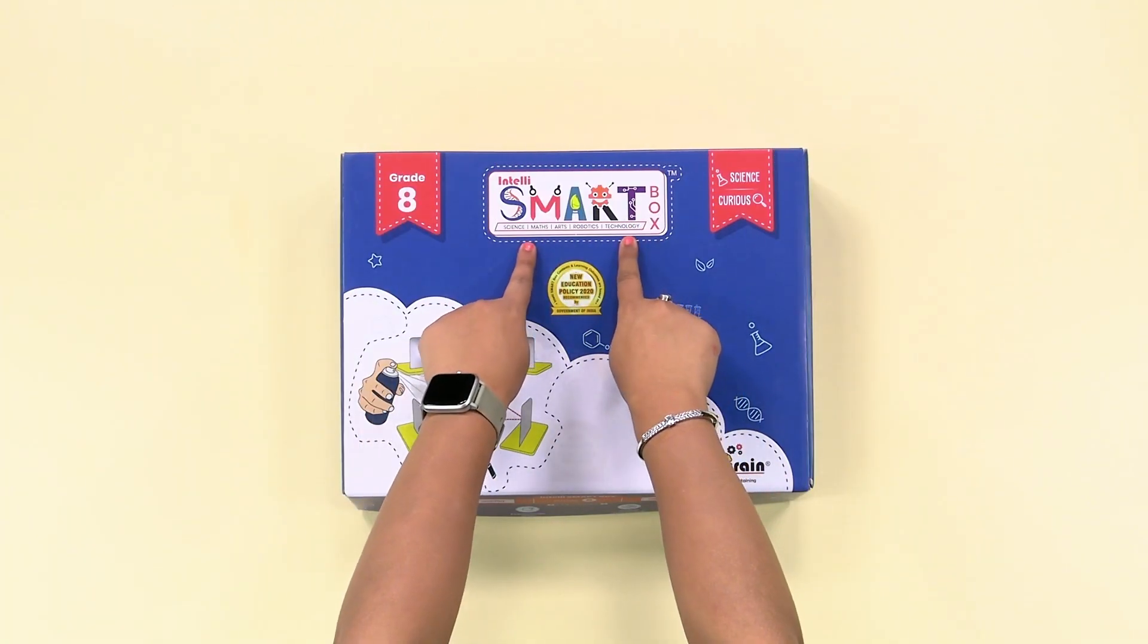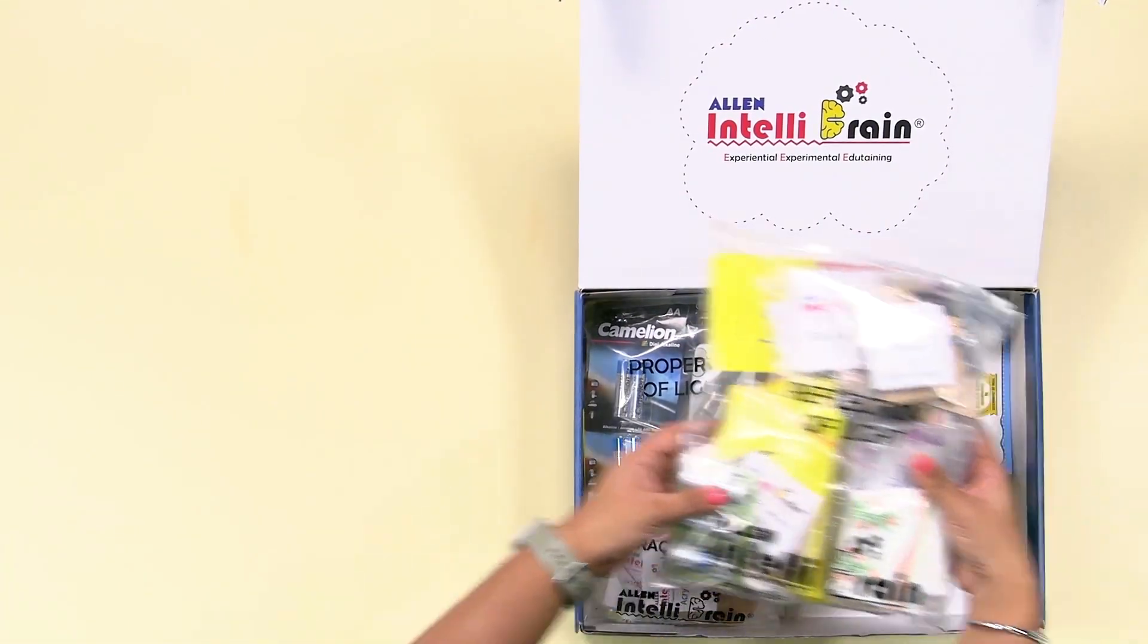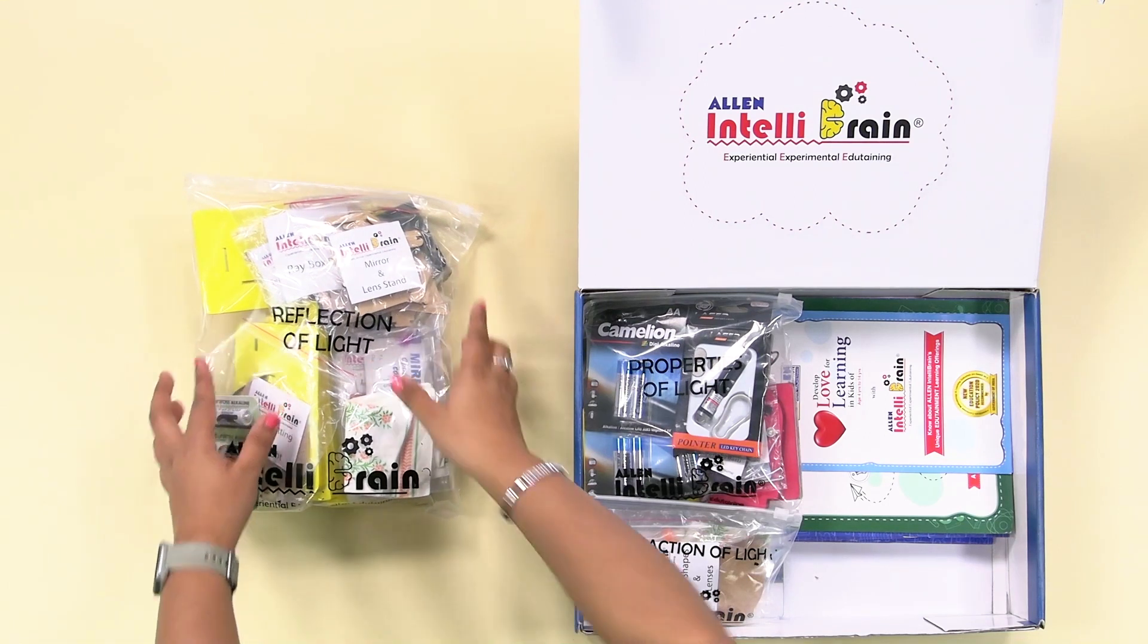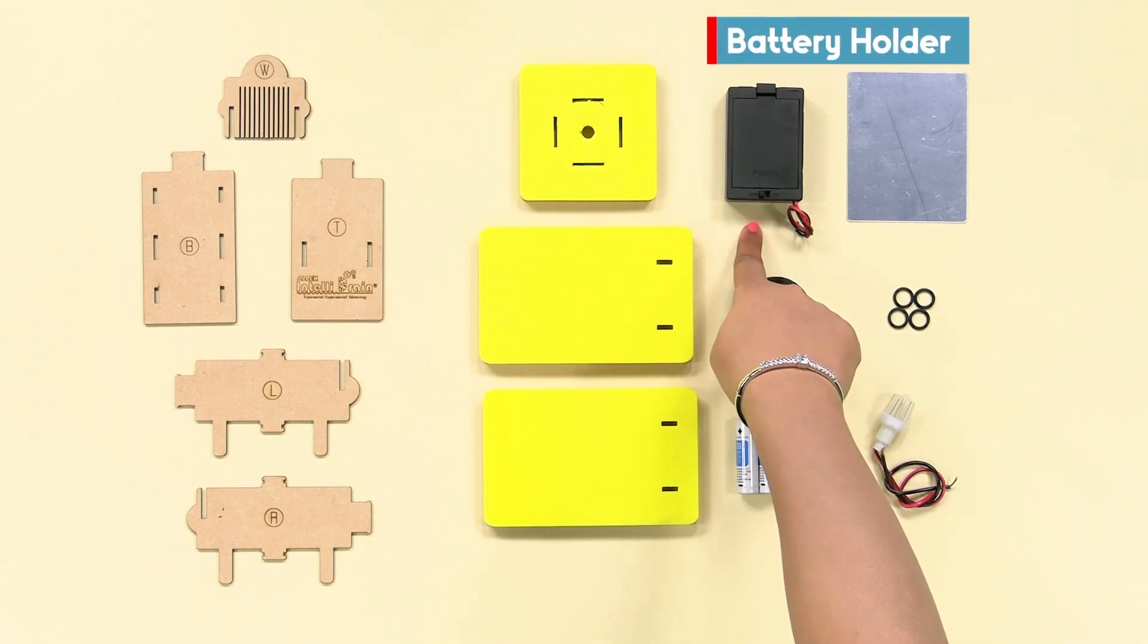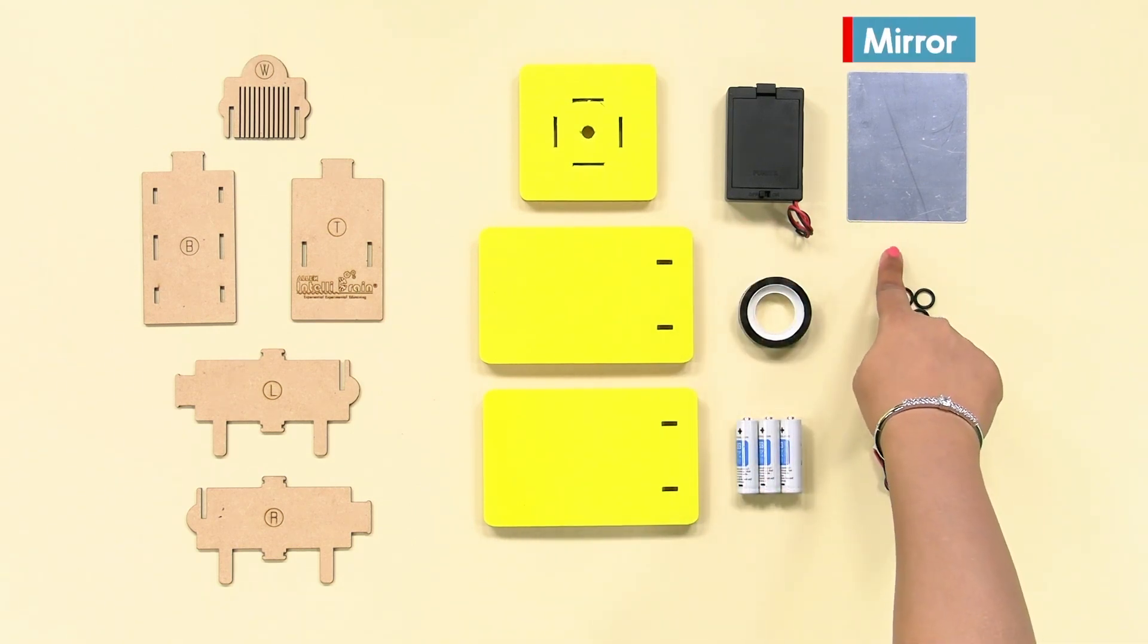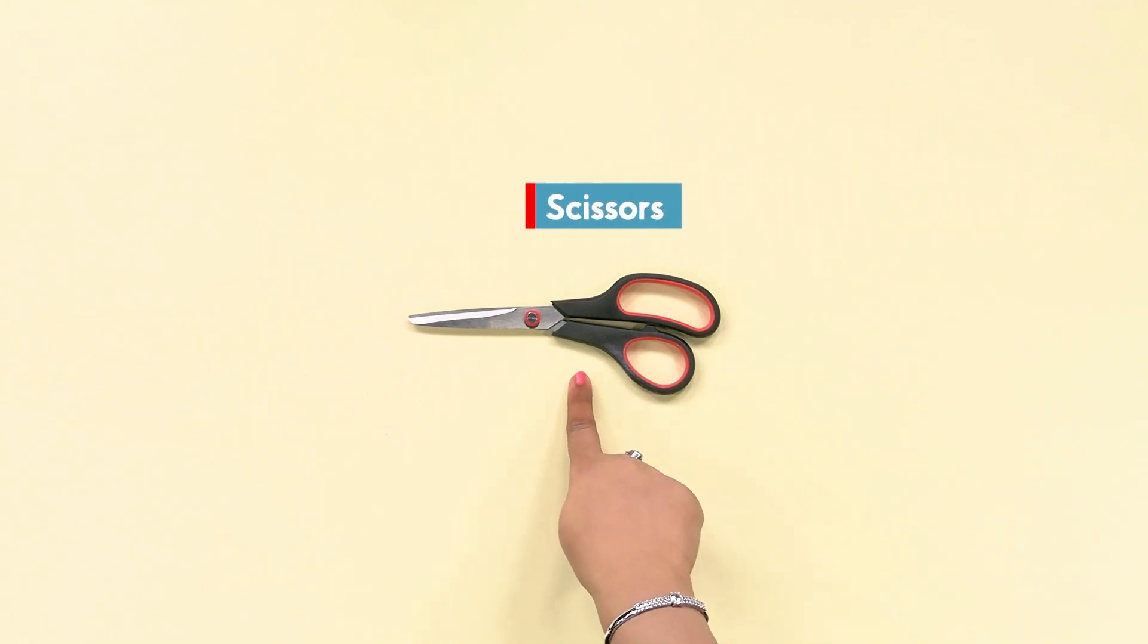From the IntelliSmart box, take out the reflection of light activity kit. From the kit, take out the ray box parts W, B, T, L, R and the foam pieces. Also take out the battery holder, the mirror, cello tape, O-rings, batteries and LED light bulb from the kit. You will also need a pair of scissors from your home.